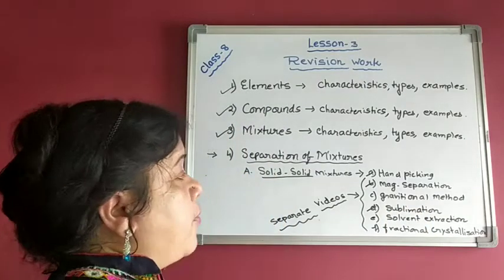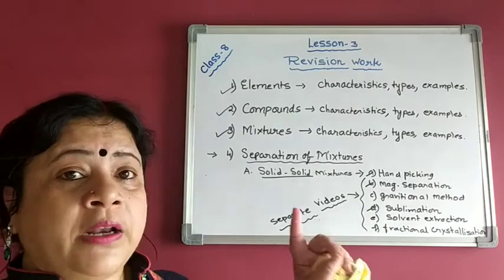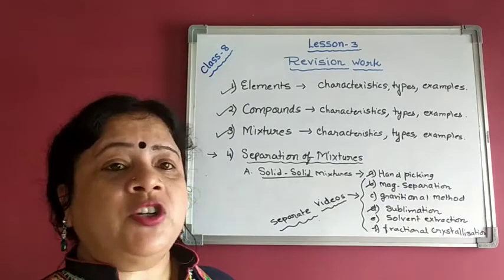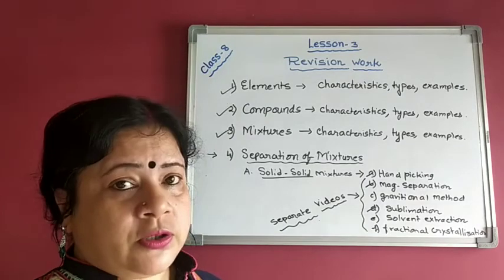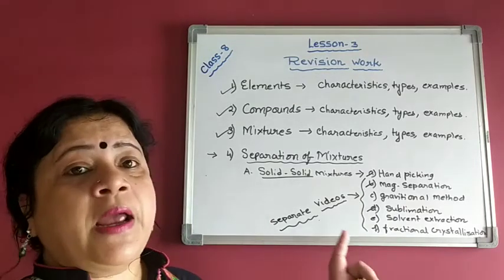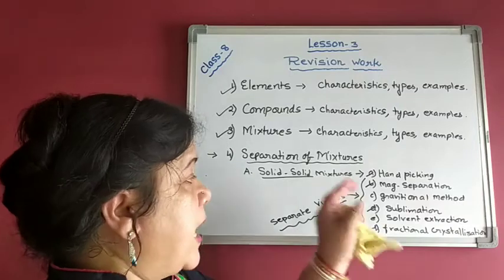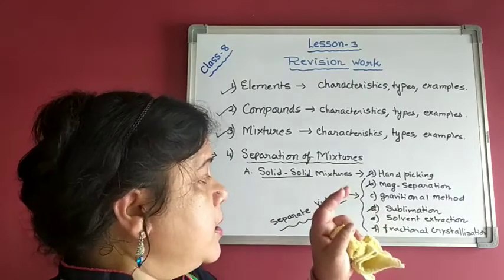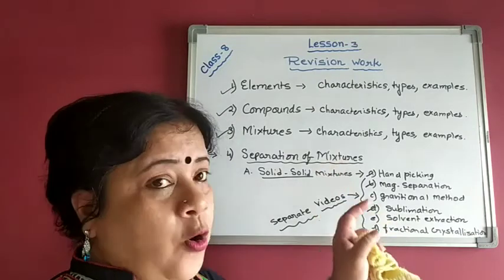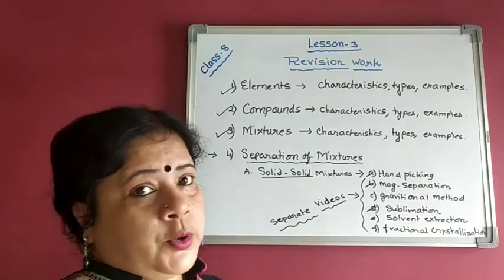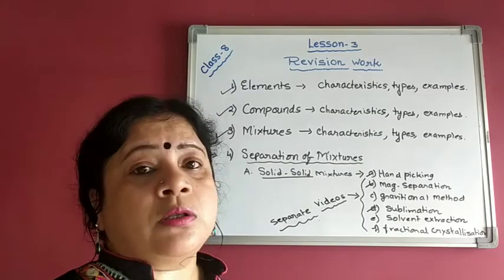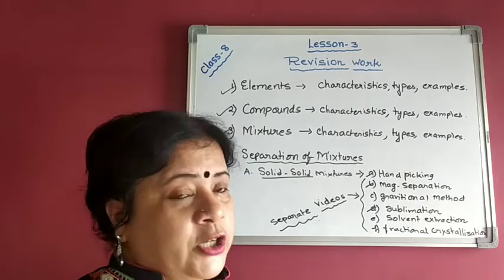For solid-solid separation, you are required to remember the name of the process and the principle behind it with examples. The explanation of the process is not required, but the principle is very important. The methods covered are: hand picking, magnetic separation, gravitational method, sublimation, solvent extraction, and fractional crystallization. Please go through the videos and tally them with your book.